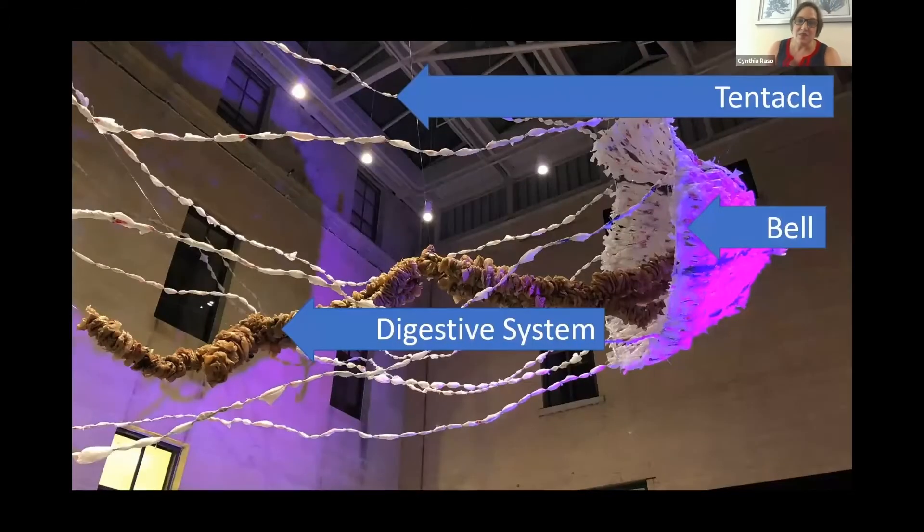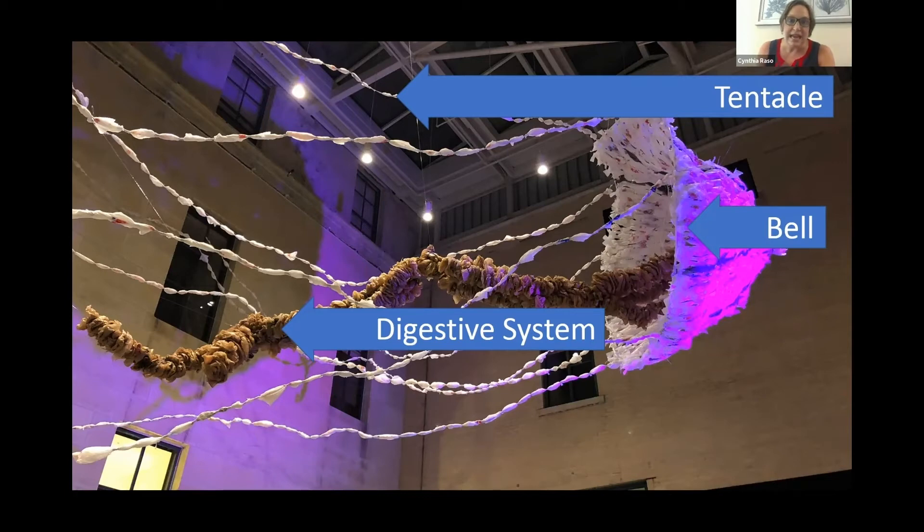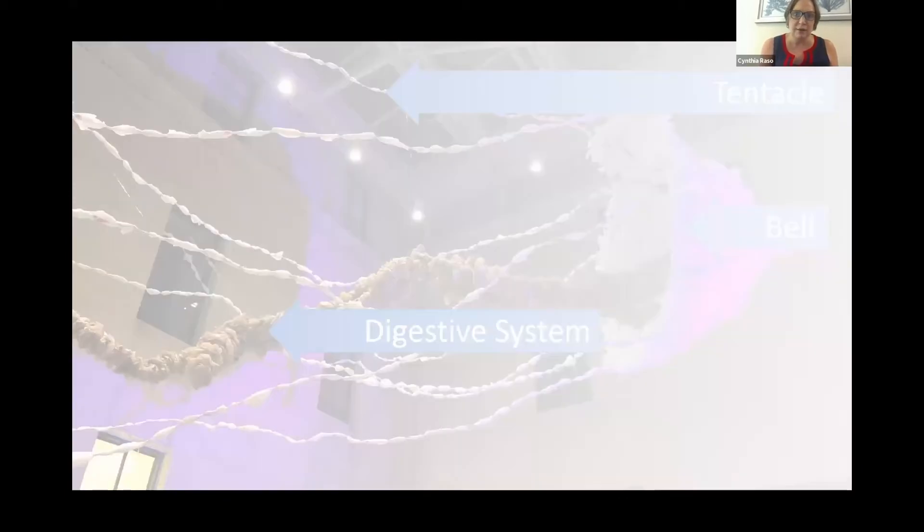So those things that we noticed are actually really important parts of the jellyfish. They are the parts of the jellyfish's body or anatomy. The tentacle, which is up top, that bell, that thing that I thought looked like a hat, and then finally that brown part is actually the digestive system. So now you know the three main parts of a jellyfish's body. Good job. Really good work.